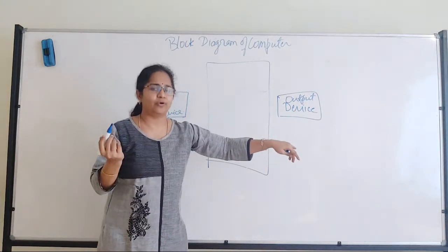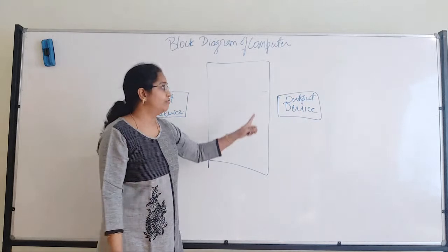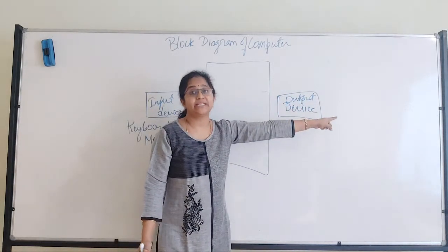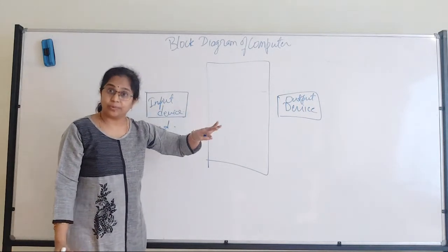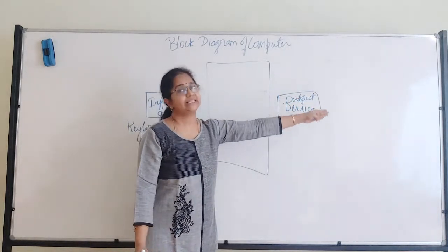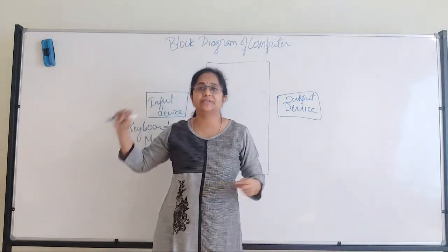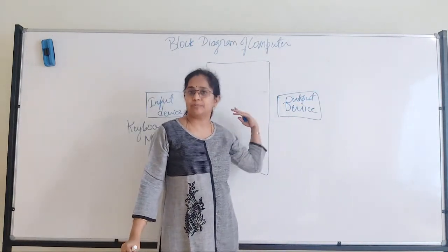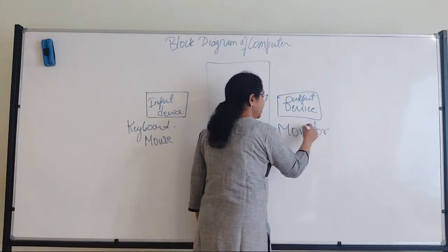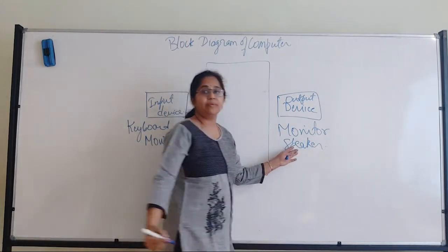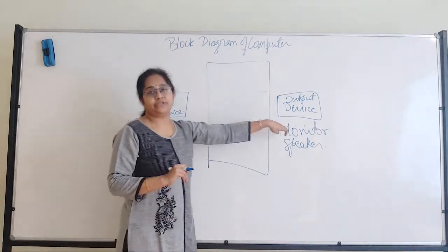Going forward, I'll be teaching one component and you think of the second component — that way you don't have to put hard work into learning everything. We have an input device, so definitely we need an output device. Input device definition: a device which helps transfer data from the external world to the system. So what is the opposite definition for output device? It's a device which helps transfer information from the system to the external world. Data is raw input; information is processed output. Examples of output devices: monitor, speaker.